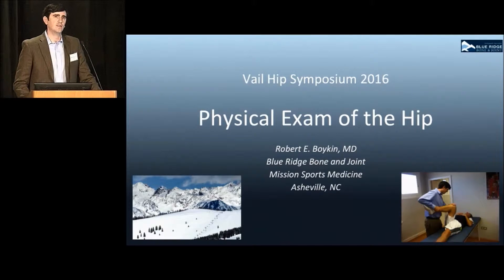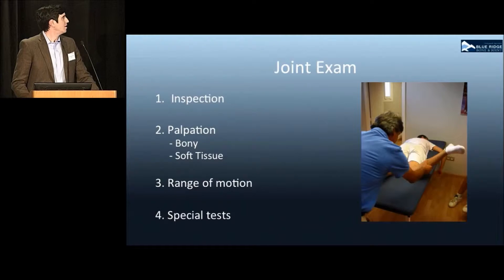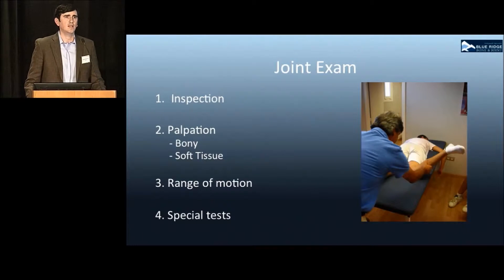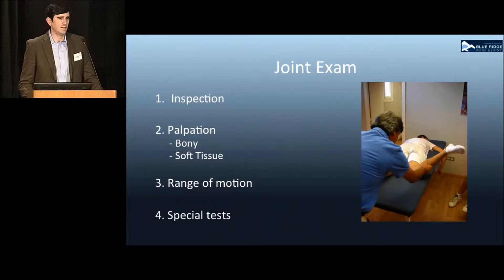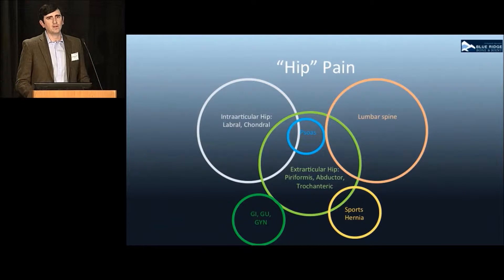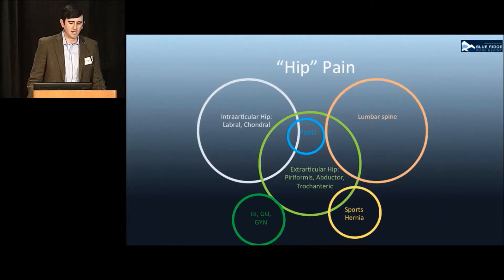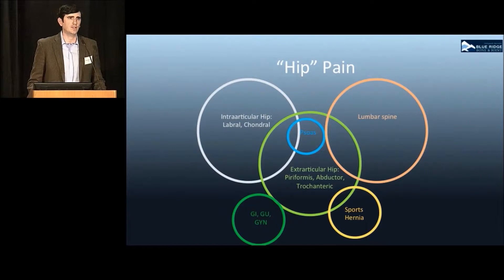The physical examination of the hip is like the exam of other joints, including inspection, palpation, range of motion, special testing, and neurovascular examination. In the hip there are a number of sources of overlapping pathology, including intra-articular, extra-articular, athletic pubalgia, lumbar spine, GI, GU, and GYN, which makes the physical examination so critical.